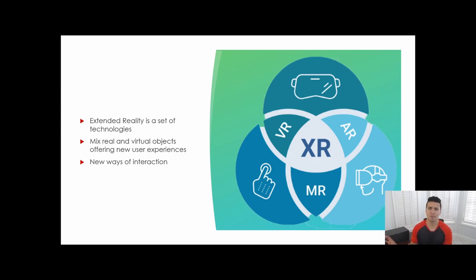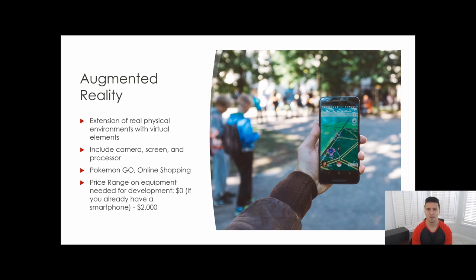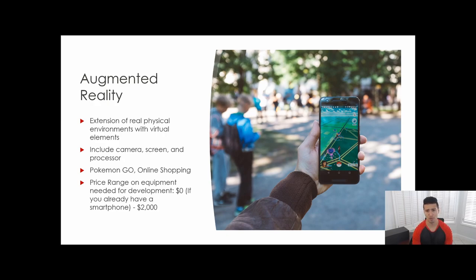Now we're going to talk about augmented reality. Augmented reality is basically an extension of the real physical environment with virtual elements. This means that within the real world, you're able to experience virtual objects — for example, placing a virtual pan that is cooking on your real kitchen stove, creating a virtual element layered over your real environment.